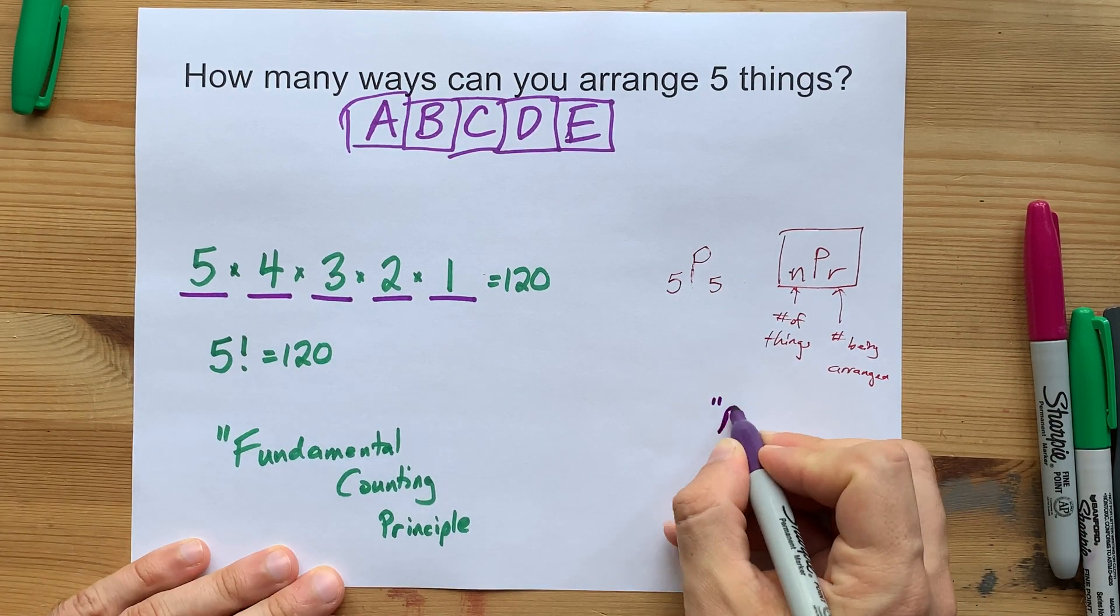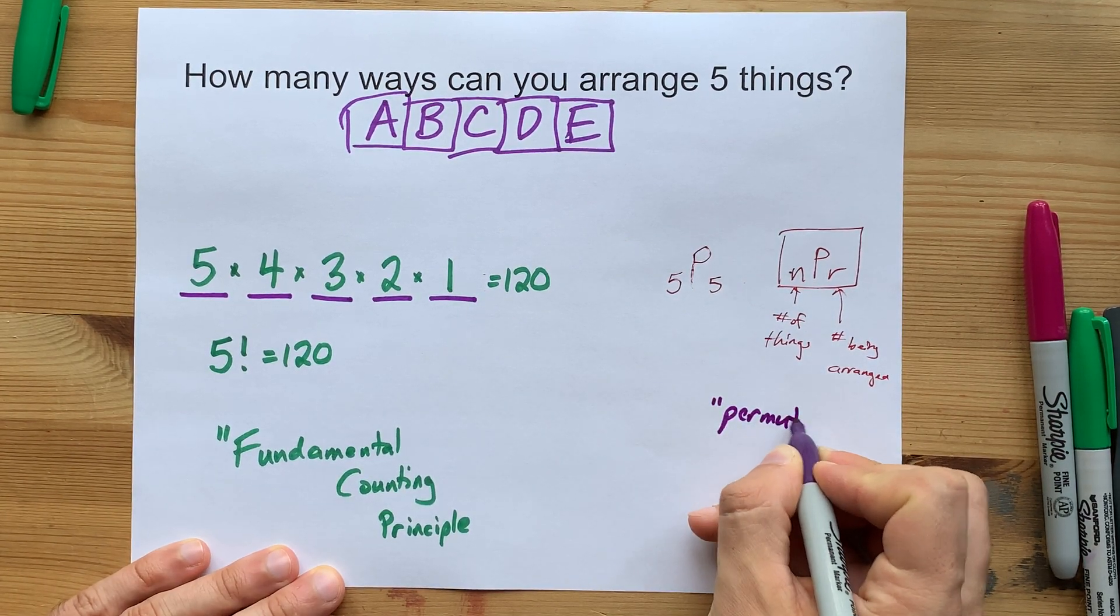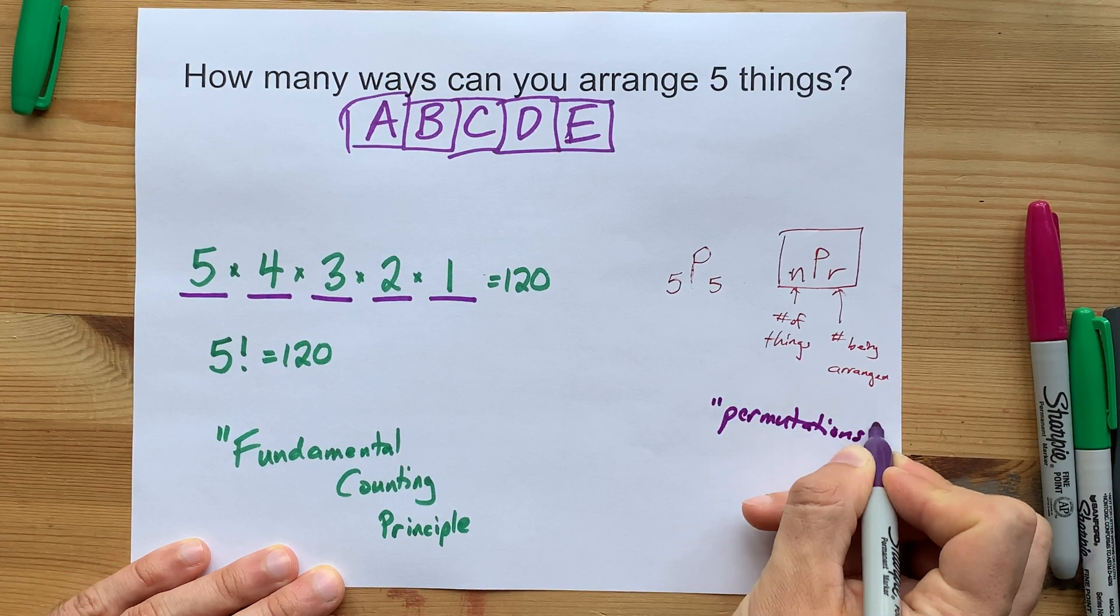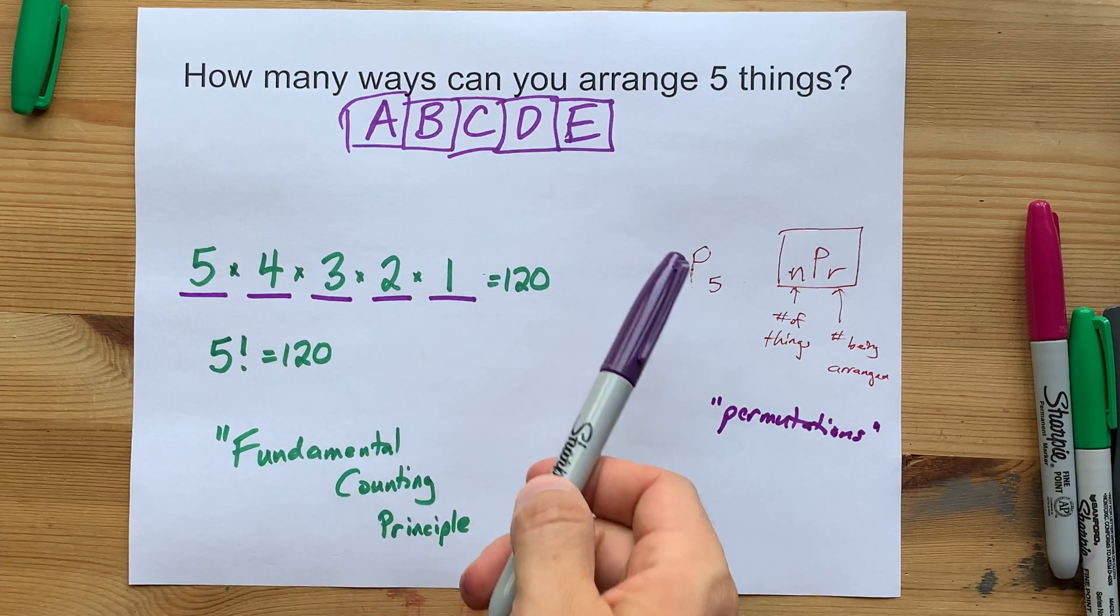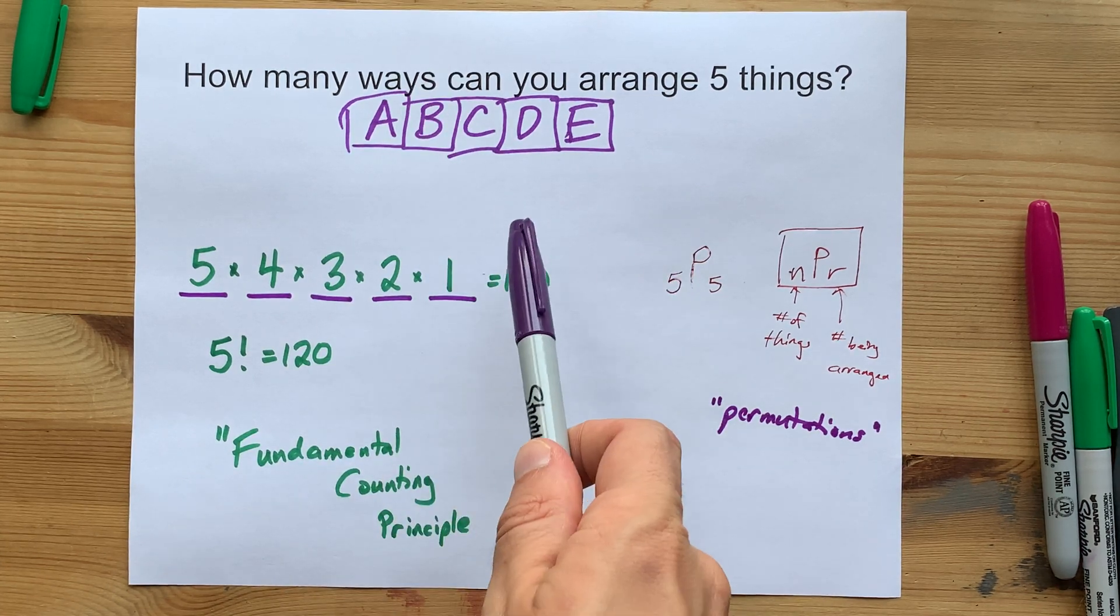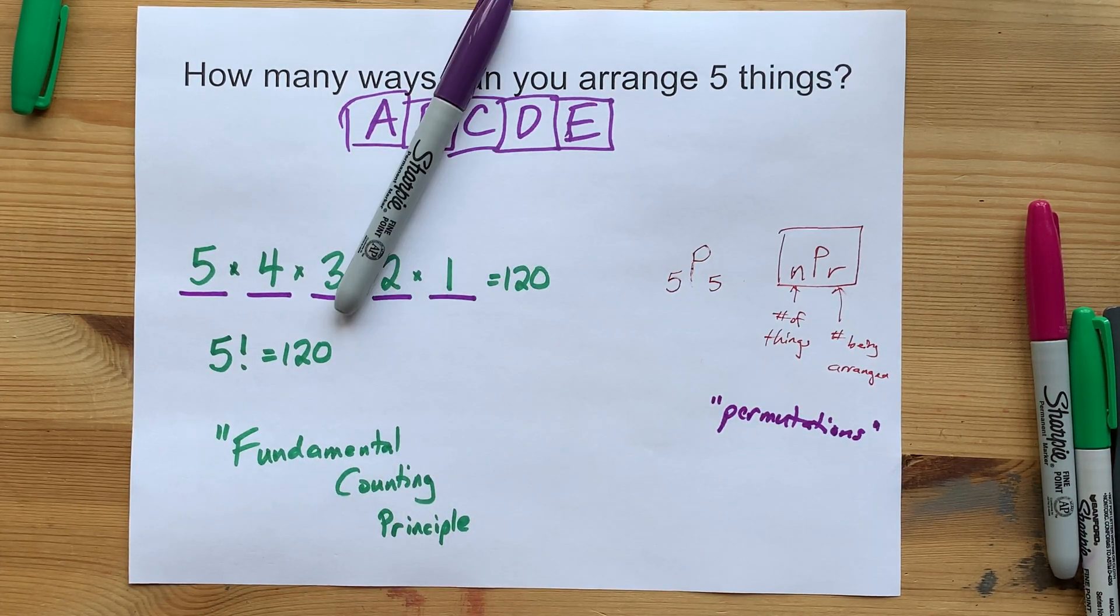This is called permutations. I like it. You're going to be seeing more of that, probably, if you're being asked this question. The wrong answer is to list all 120 combinations. Ain't nobody got time for that. Best of luck.